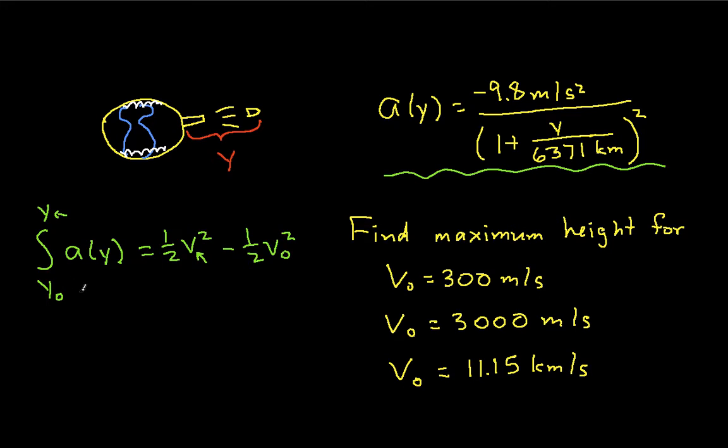Okay, so what do we know here? Well, we know V0, we know our initial velocities, and we know our initial height. We'll assume that y0 is 0, so our cannon fires from the surface of the Earth.